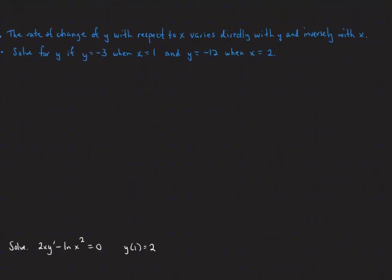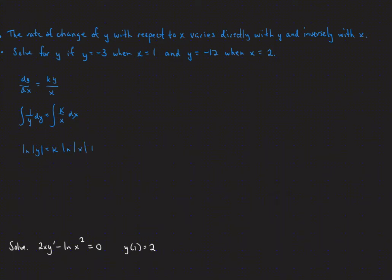Now we have: the rate of change of y with respect to x varies directly with y and inversely with x. So that means dy/dx equals k times y divided by x. We're going to separate our variables — divide y to the dy side and keep k on the x side with dx. Integrating both sides gives us the natural log of the absolute value of y equals k times the natural log of the absolute value of x, plus c.